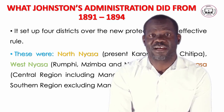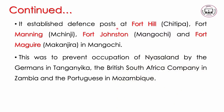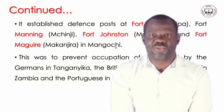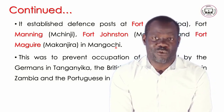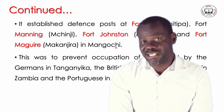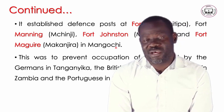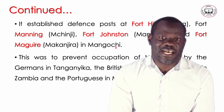He also established defense posts — forts — at Fort Hill in Chitipa, Fort Manning in Mchinji, Fort Johnson in Mangochi, and Fort Magaya at Makanjira in Mangochi. So there were four forts: Fort Hill in Chitipa, Fort Manning in Mchinji, and two forts in Mangochi — Fort Johnson and Fort Magaya at Makanjira.